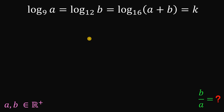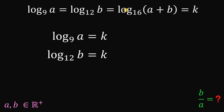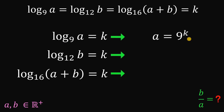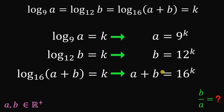From here, we have three equations. Logarithm of A to the base of 9 equals k. Another is logarithm of B to the base of 12 equals k. And the third one is logarithm of A plus B to the base of 16 equals k. We can convert these logarithmic equations into exponential form: A equals 9 to the power of k, B equals 12 raised to the power of k, and A plus B equals 16 raised to the power of k.